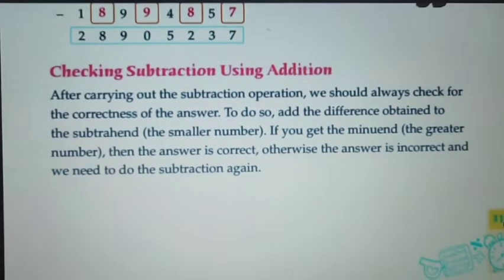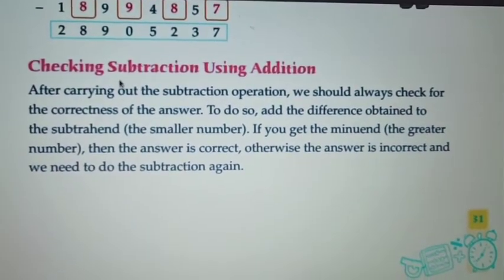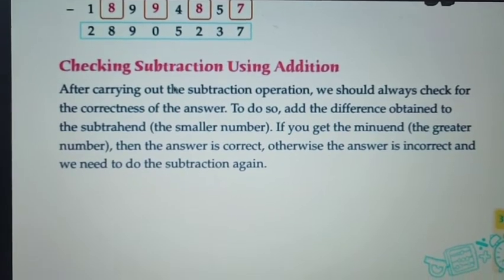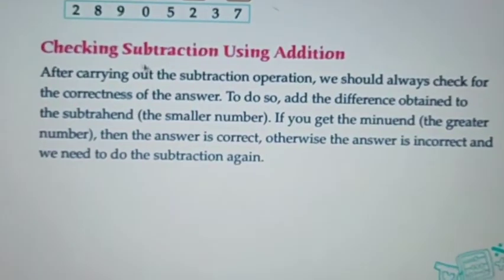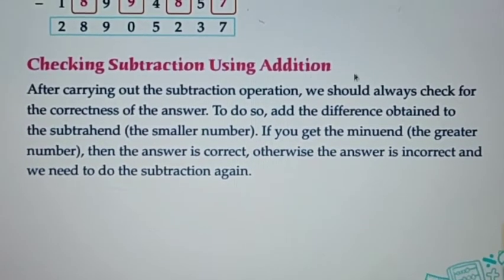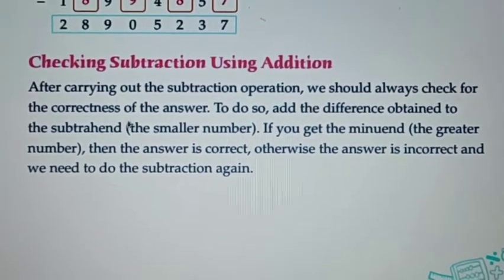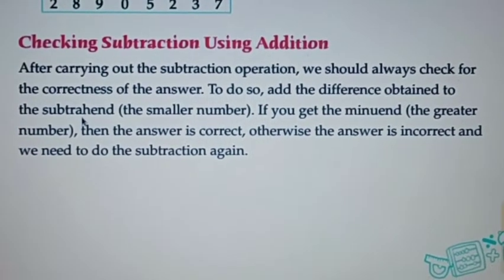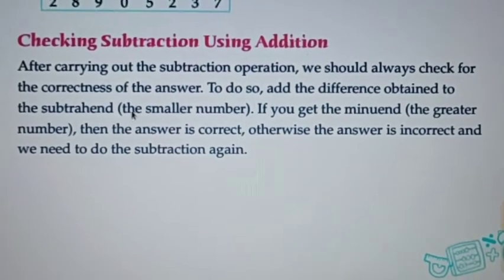Next, textbook page number 31: Checking subtraction using addition. If the information we will need further, how can we check the answers? After carrying out the subtraction operation, we should always check for the correctness of the answer. To do so, add the difference obtained to the subtrahend, means the smaller number.